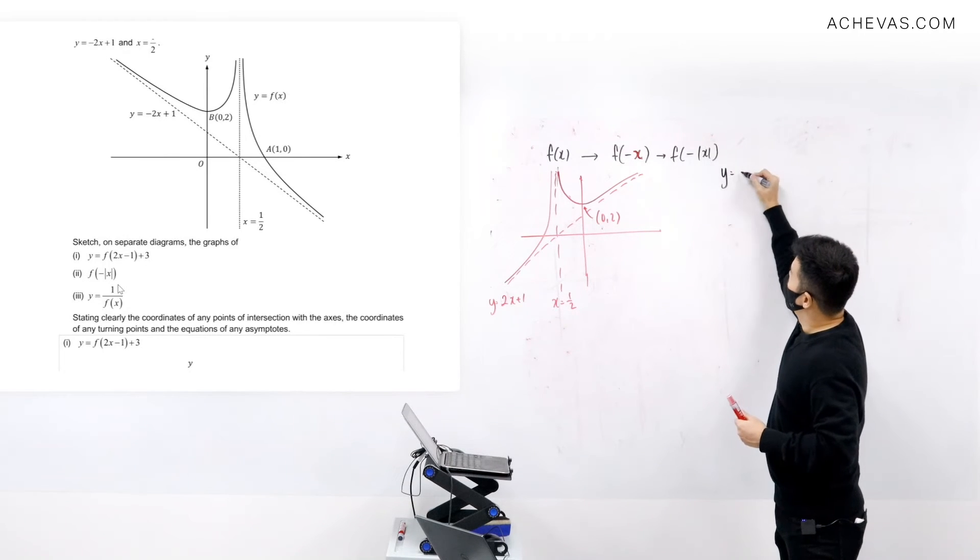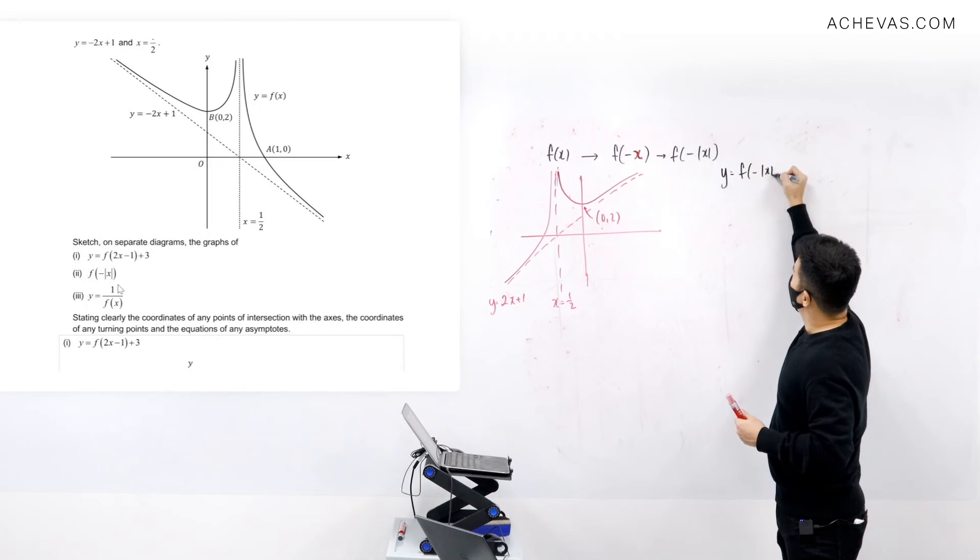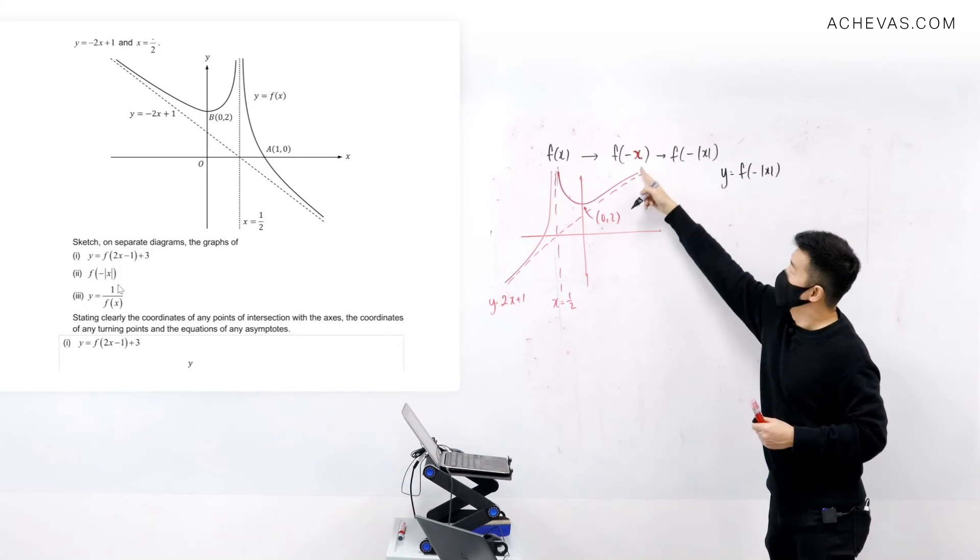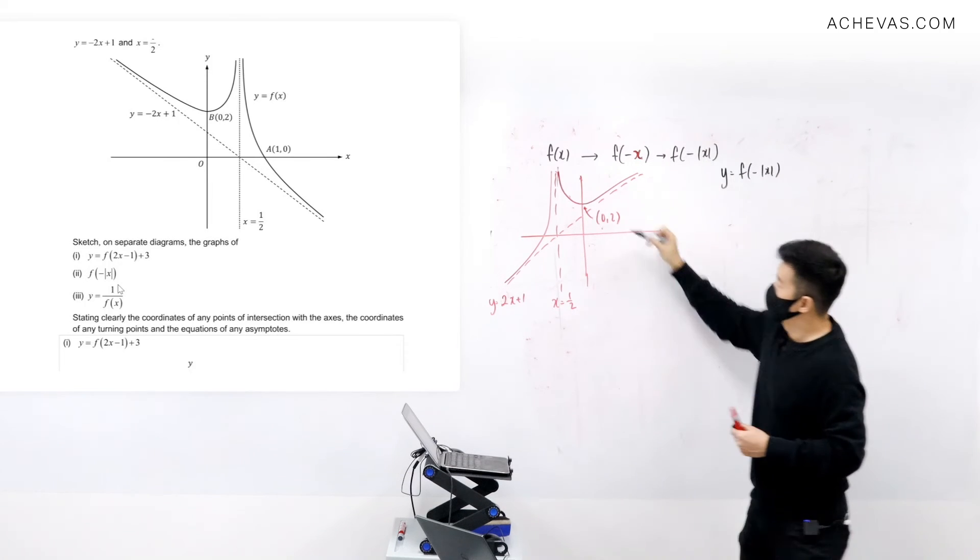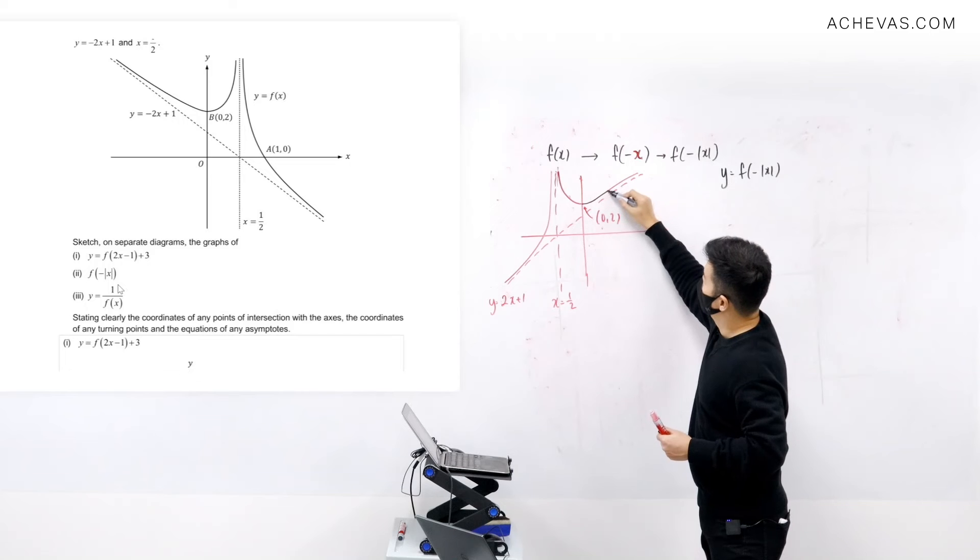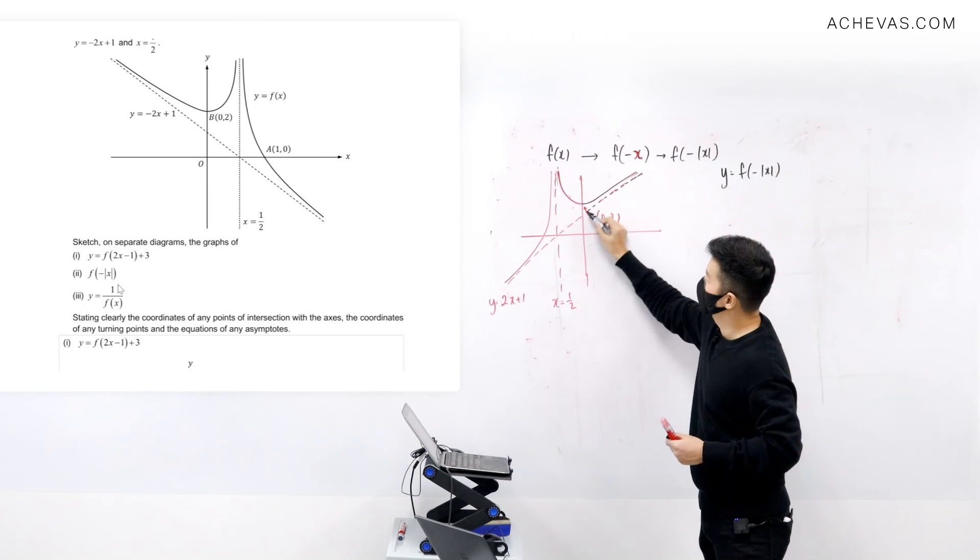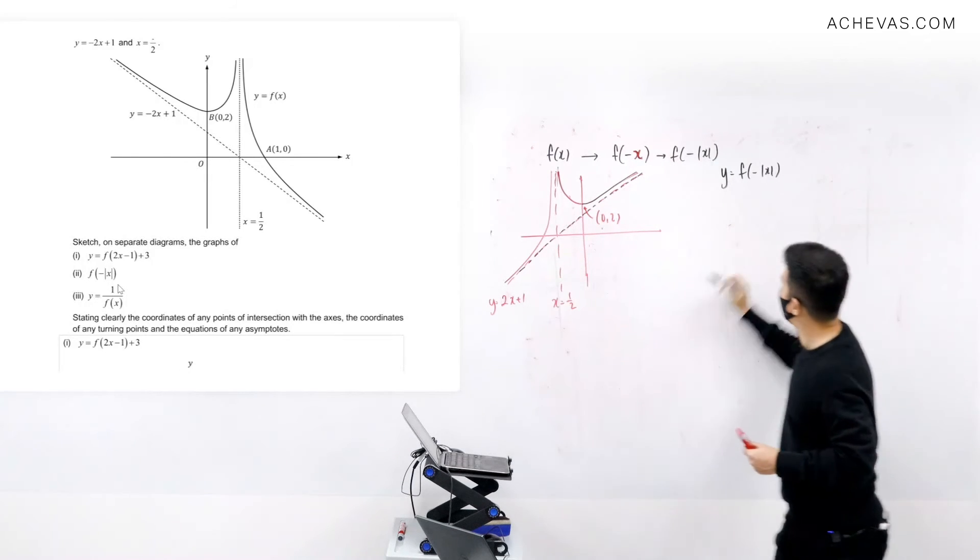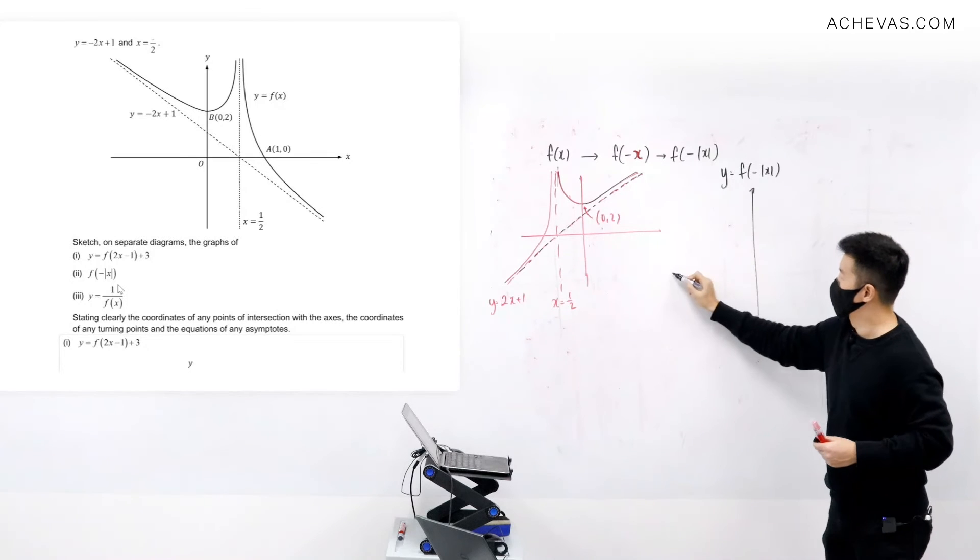And now I'm ready to draw this graph: y equals this, where I replace the x here by modulus of x, which means that this part will remain the same. And this part involves the oblique asymptote. So I do want this oblique asymptote. So my graph will be like this.